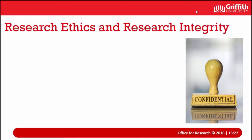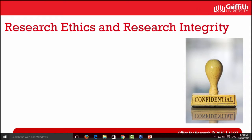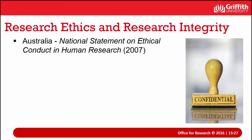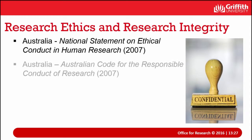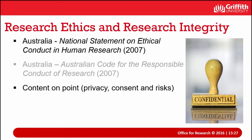When thinking about research ethics and research integrity of data, the guidance in terms of human research ethics can be found in the National Statement, and in terms of research integrity it can be found in the Australian Code. Both of those documents have got content on this issue, covering matters like privacy, consent and risk.